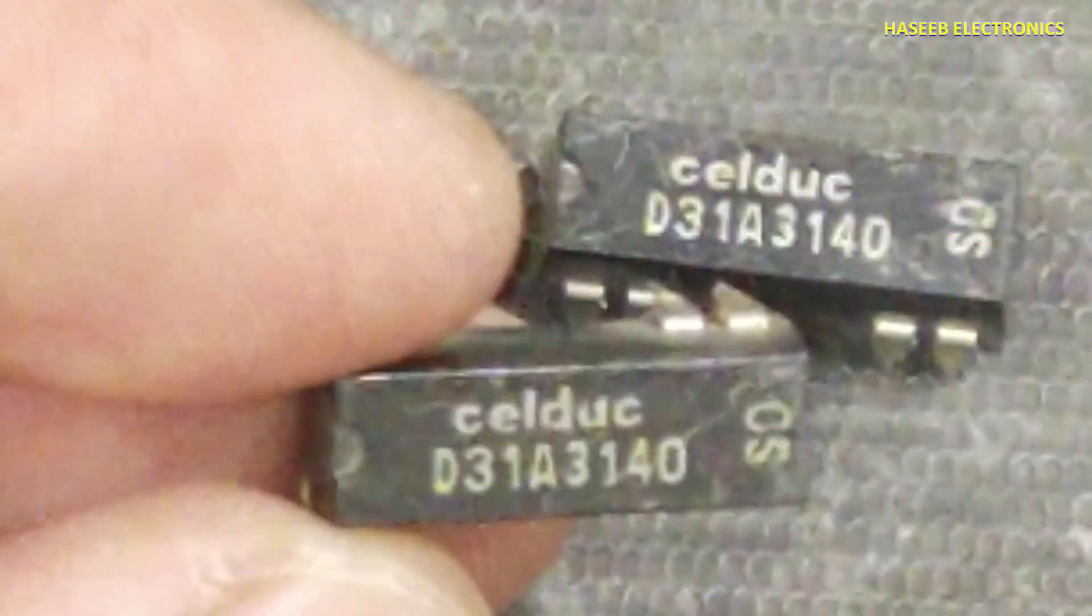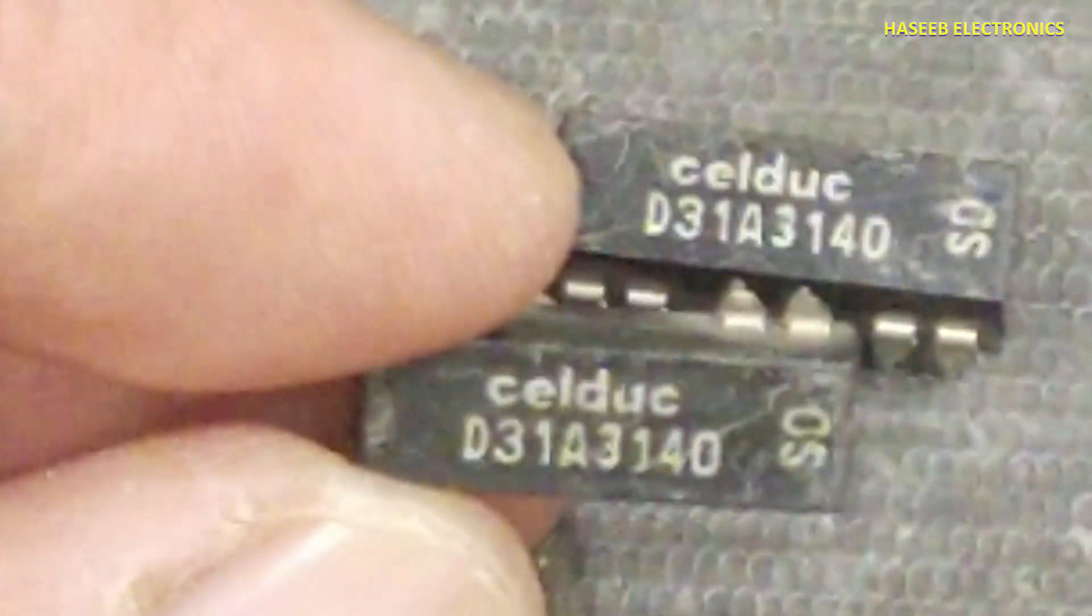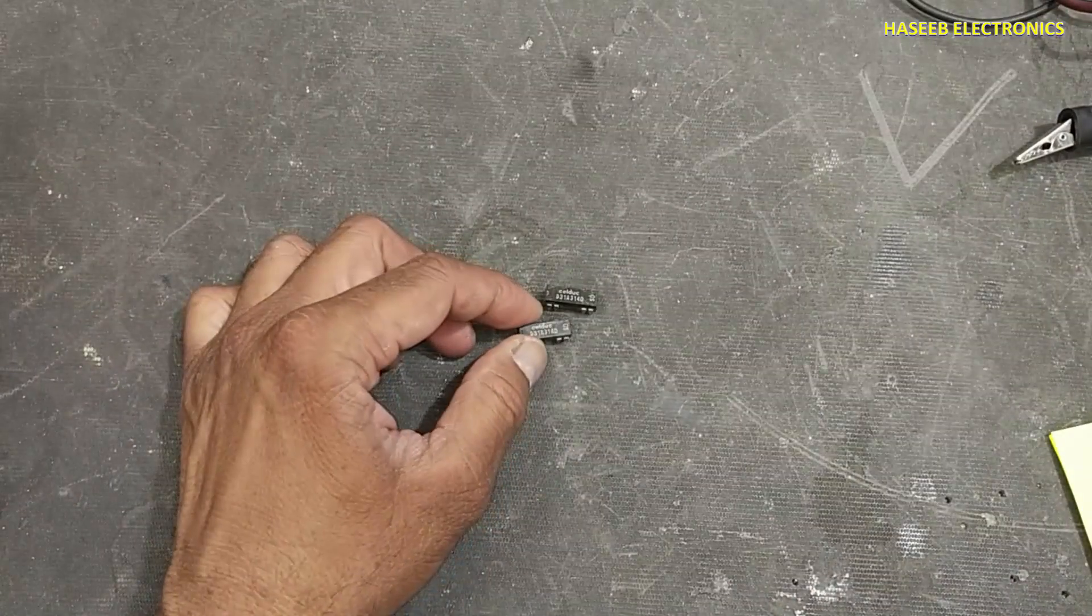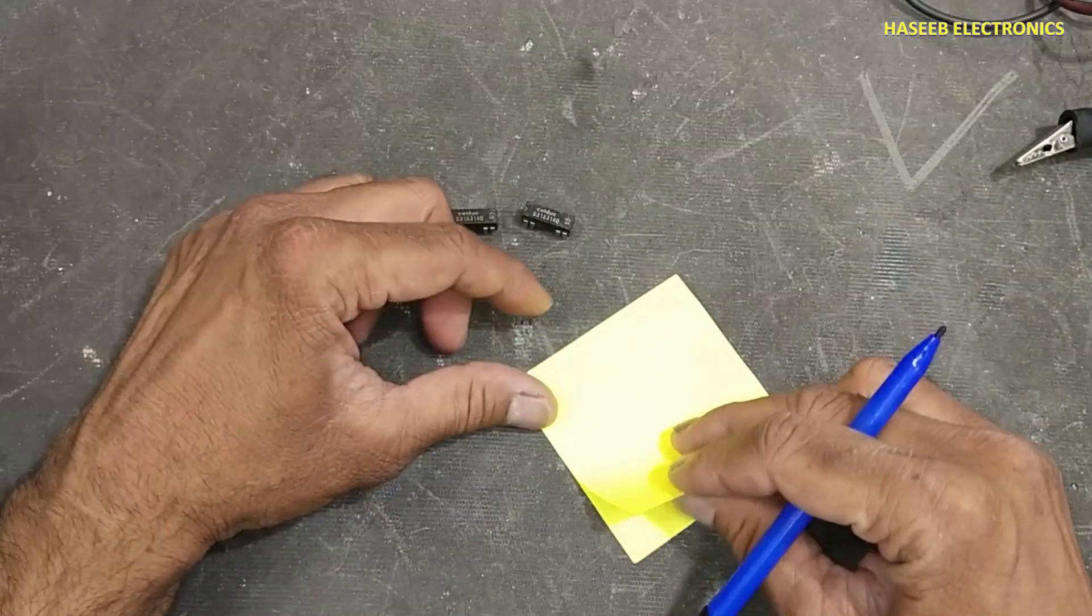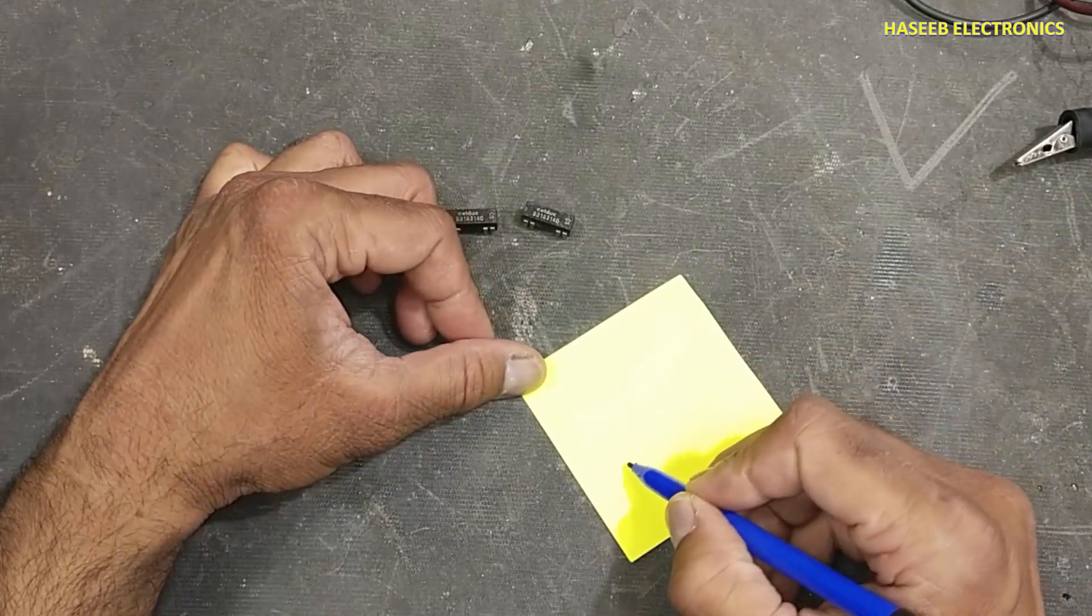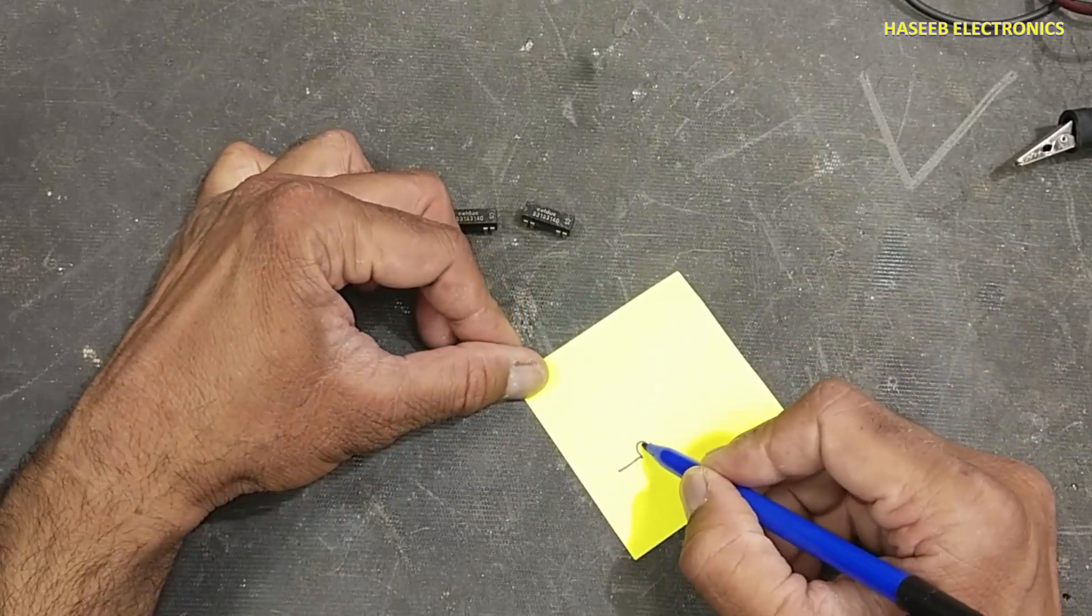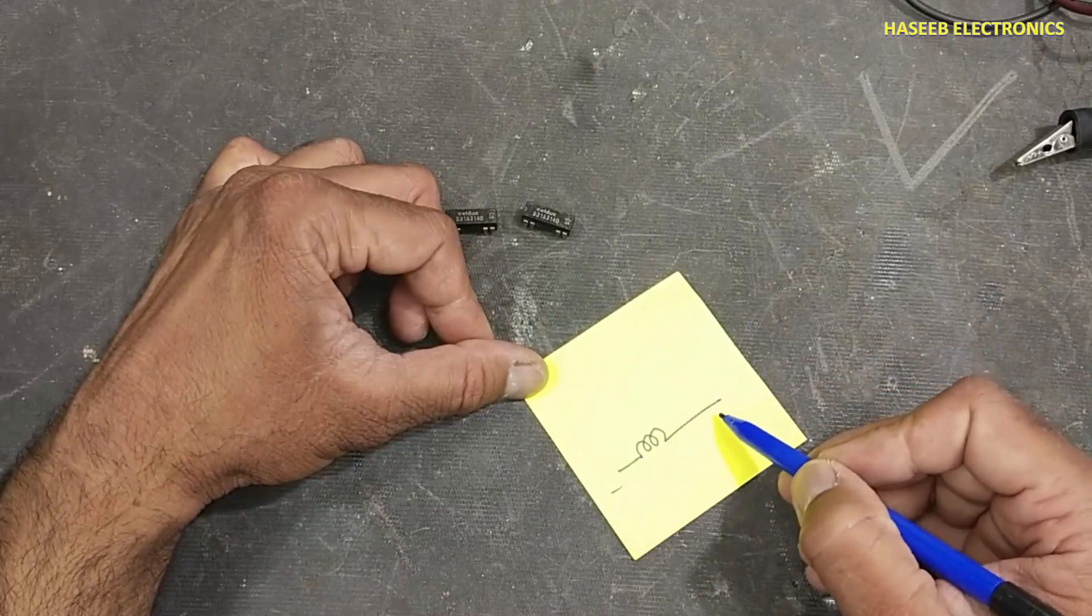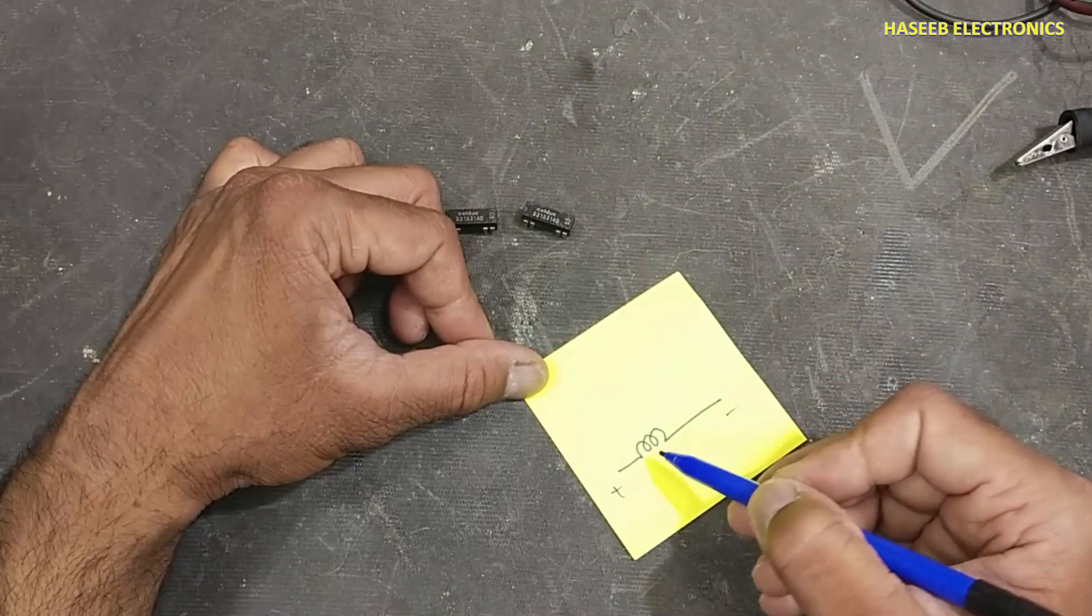Friends, welcome back to my channel. I have this magnetic reed relay D31A 3140. Let's see how we can test it and how it works. A reed relay is basically an electromagnetic switch. We apply voltage, positive and negative, to the coil.